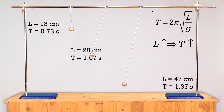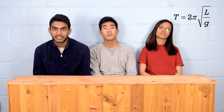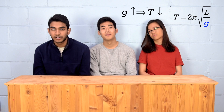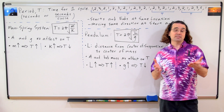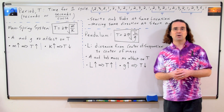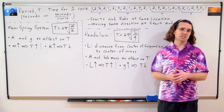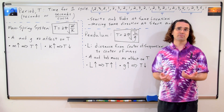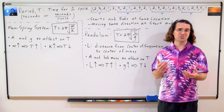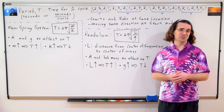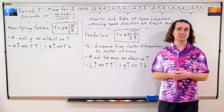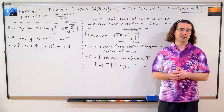Anish, if we increase the acceleration due to gravity, what happens to the period of a pendulum? The acceleration due to gravity is in the denominator, so increasing the acceleration due to gravity will decrease the period of the pendulum. Yes, now I do apologize. However, the Flipping Physics budget does not allow for me to leave the surface of the planet to demonstrate how changes in the acceleration due to gravity affect the period of a pendulum. I'm sorry.